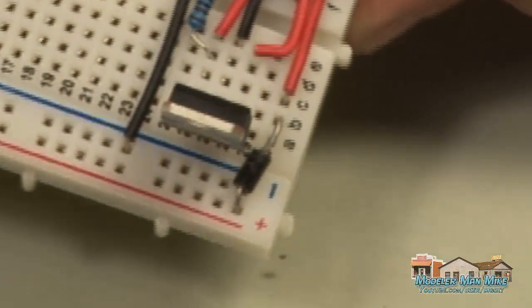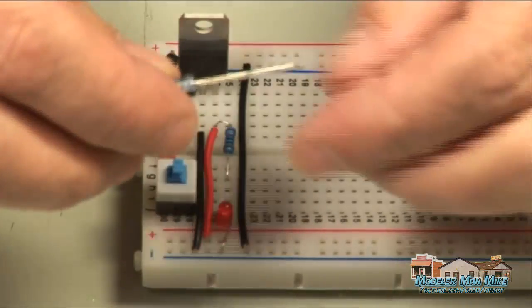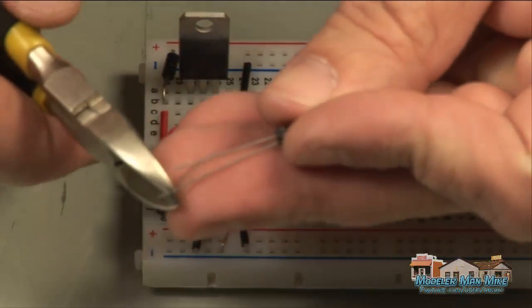Then whenever I click the switch on, then it delivers the power from this rail into the switch into the 7805.